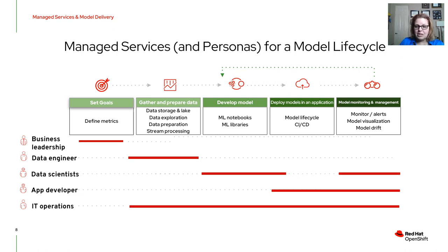The data scientist will sit down and develop, train, and test a model. They'll likely do this in an IDE such as PyCharm, initially using machine learning notebooks and libraries such as TensorFlow or PyTorch. Once they feel the model is good enough to answer the goals set by leadership, they'll hand it off to an app developer. The app developer deploys the model within an application, which brings CI/CD and MLOps into the model life cycle.